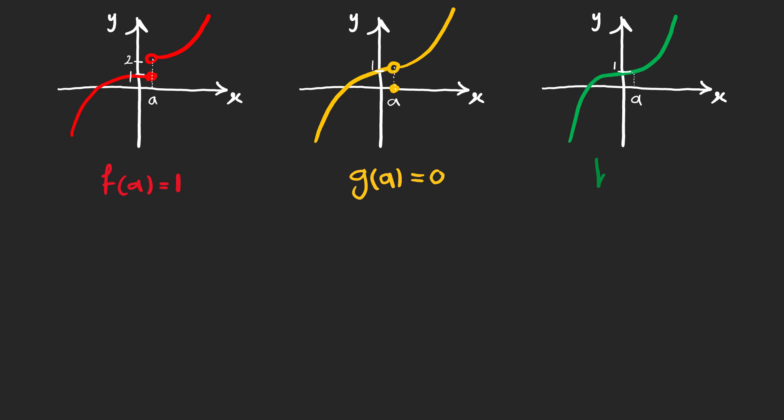f a is one, g a is zero, and h of x is one at point a. Right and left-hand limits of f of x are respectively two and one and not equal. So, this function doesn't have a limit at x equals a.